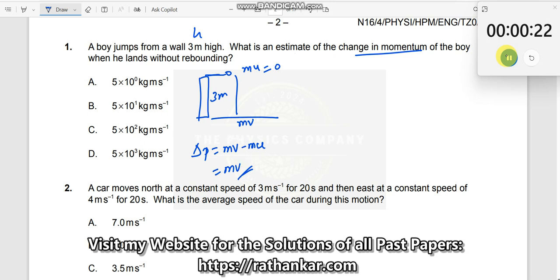Now you want this. Now nothing else is given. See the question is about estimates. When you say estimate, you can assume something and proceed. Now what is it you can assume? The mass of a boy can be assumed to be somewhere between 50 to 60 kgs. Now let me assume 60 kgs.